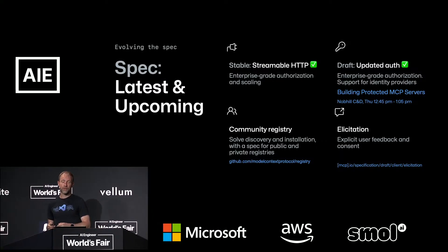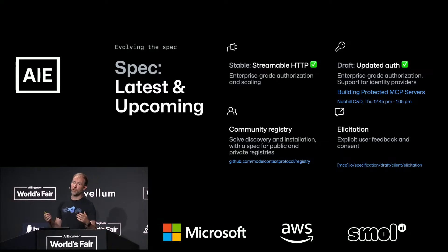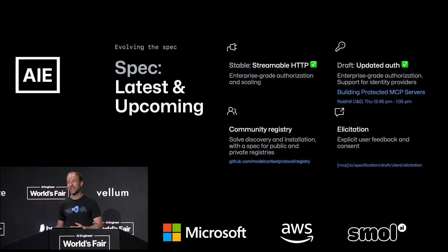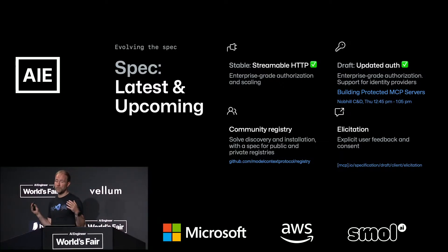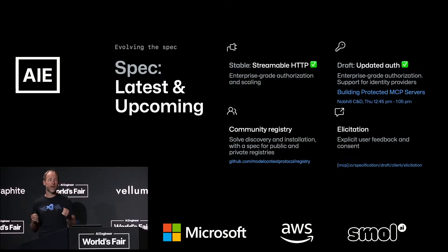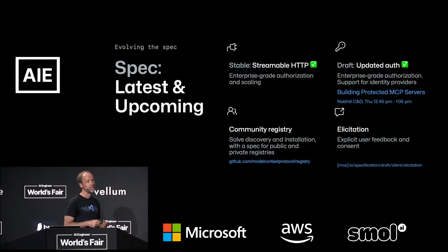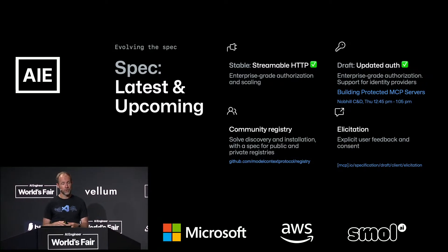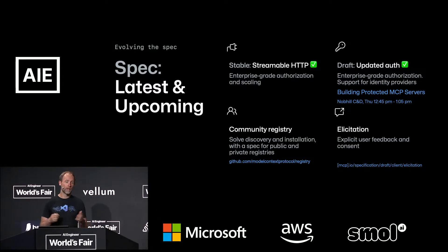There's a community registry happening, which addresses the big pain point of server discovery — if I build a server and nobody finds it, how do I send people to it? Do I just send JSON blobs around? There's a lot of community work to make discovery easy. Big shout out to everybody on the steering committee and community working groups. It's on model-context-protocol/registry on GitHub, and it's all happening out in the open.